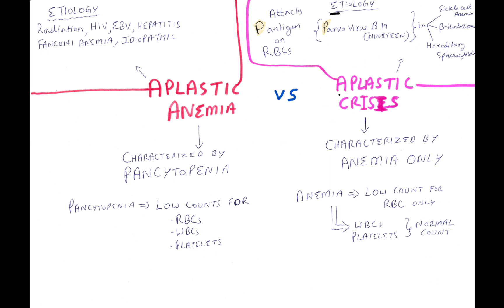The etiology of aplastic crisis is parvovirus B19. Parvovirus B19 attacks the P antigen on RBCs, and it especially affects patients with sickle cell anemia, beta thalassemia, or hereditary spherocytosis.